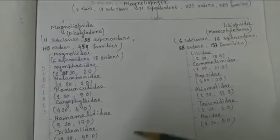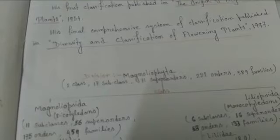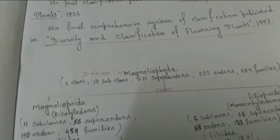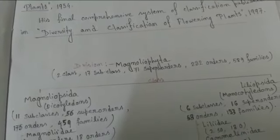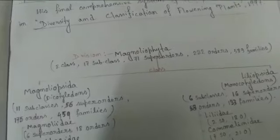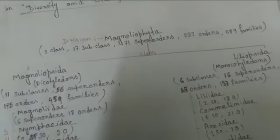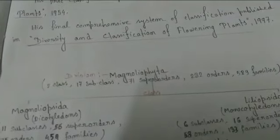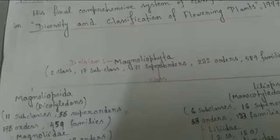A few of those principles are: firstly, regarding growth habit, Arman Takhtajan considered woody plants as more primitive than herbaceous plants, and evergreen plants are primitive compared to deciduous woody plants. About leaves, his thought was that parallel venation is advanced, and alternate phyllotaxy is primitive. He considered cymose inflorescence as primitive compared to racemose.